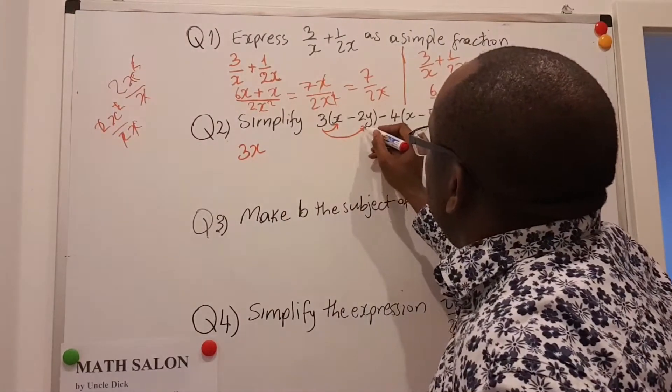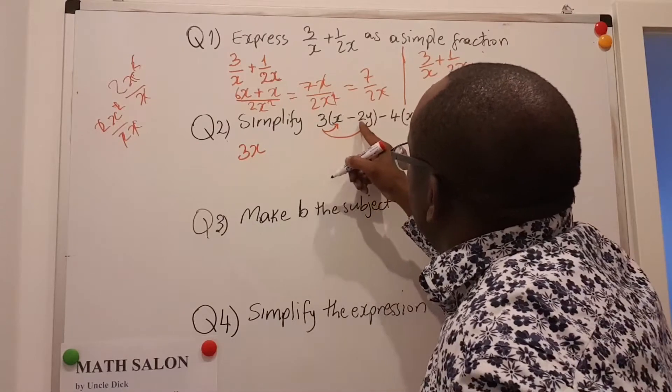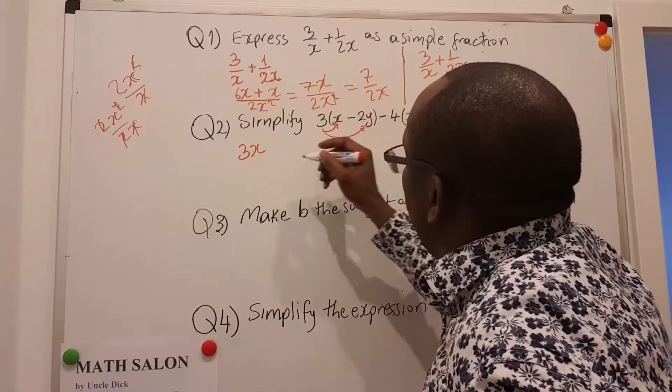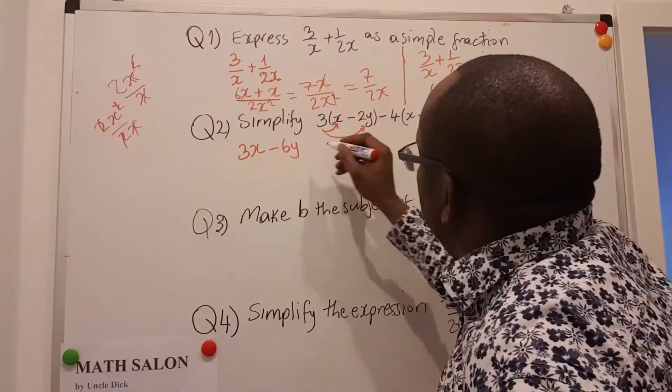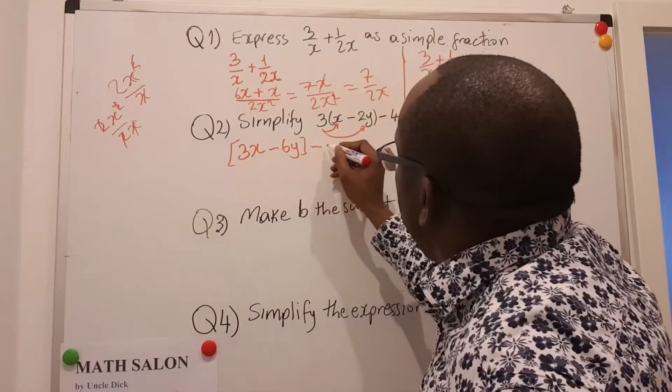3 times minus 2 is minus 6, and y. So minus 6y. This minus here—it's good to always have your brackets. Put the minus.